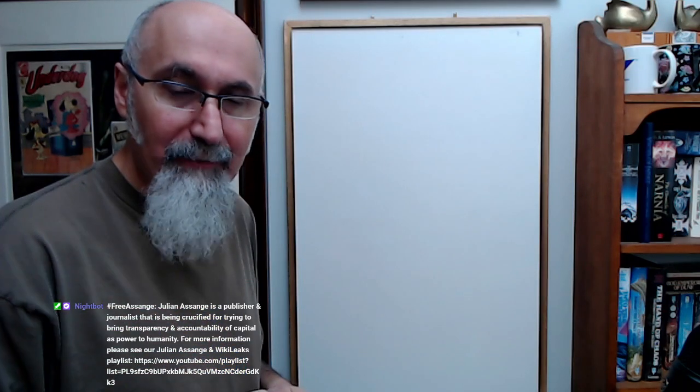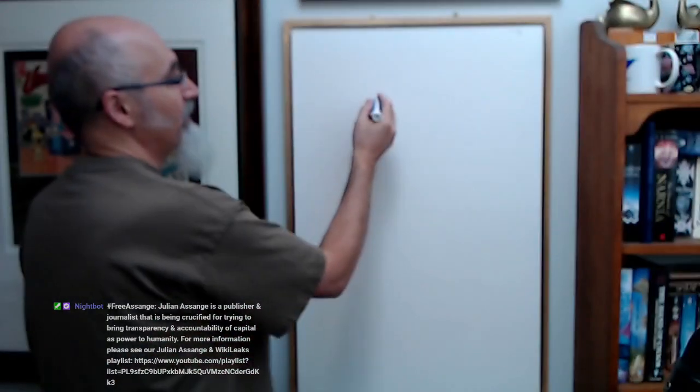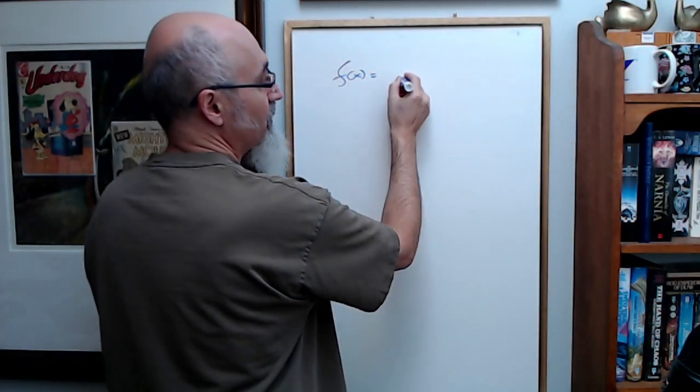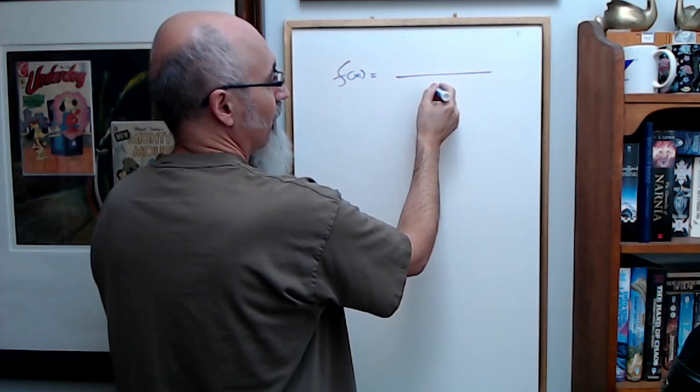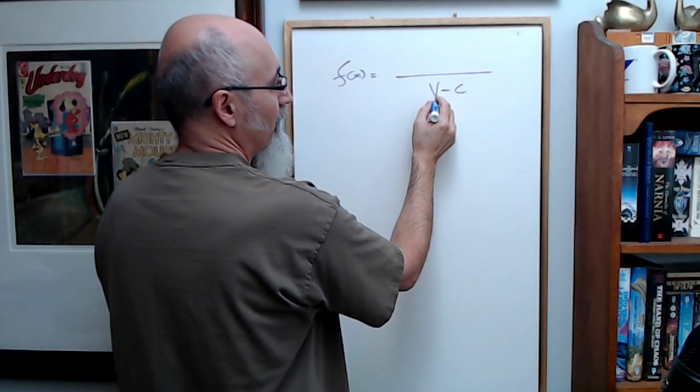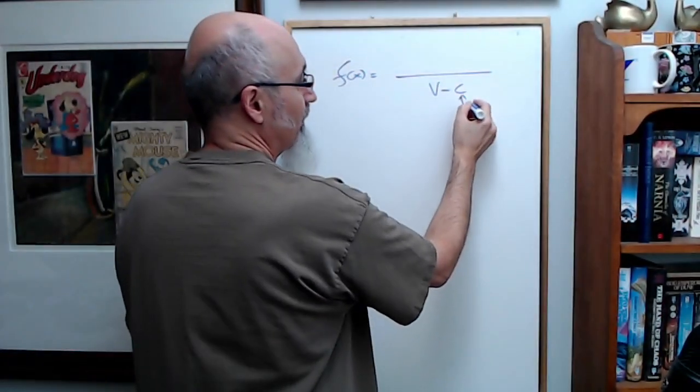In Albert Einstein's paper on the electrodynamics of moving bodies, if you end up traveling at the speed of light in his equations, in the bottom you're gonna get velocity minus C, where velocity is your speed and C is the speed of light.